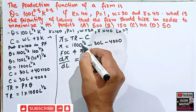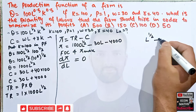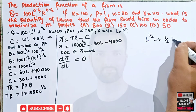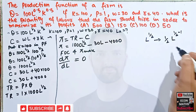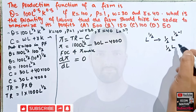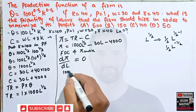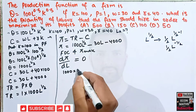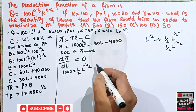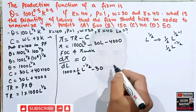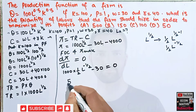The derivative of L^(1/2) by the power rule is (1/2)L^(−1/2). So differentiating the profit function: dπ/dL = 1000 × (1/2) × L^(−1/2) − 30 = 0, which gives 500L^(−1/2) − 30 = 0.